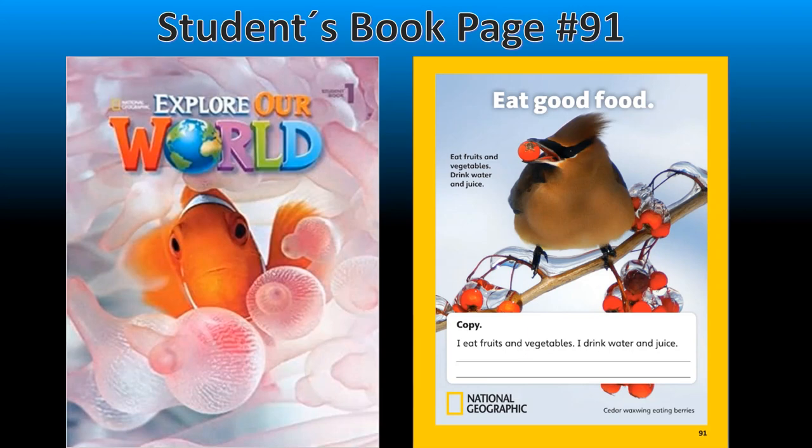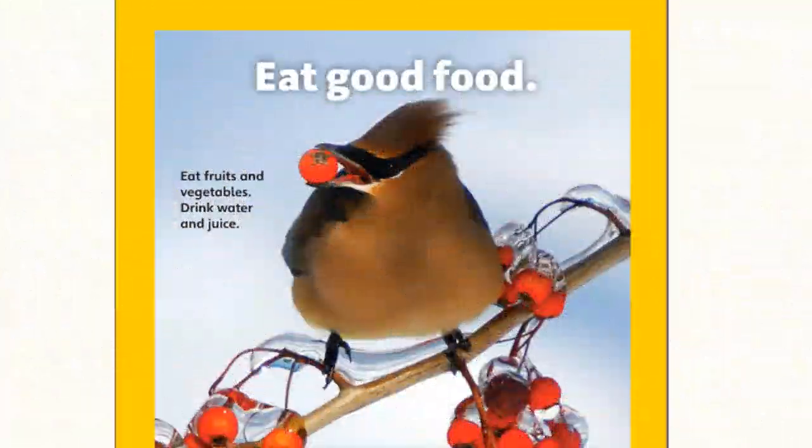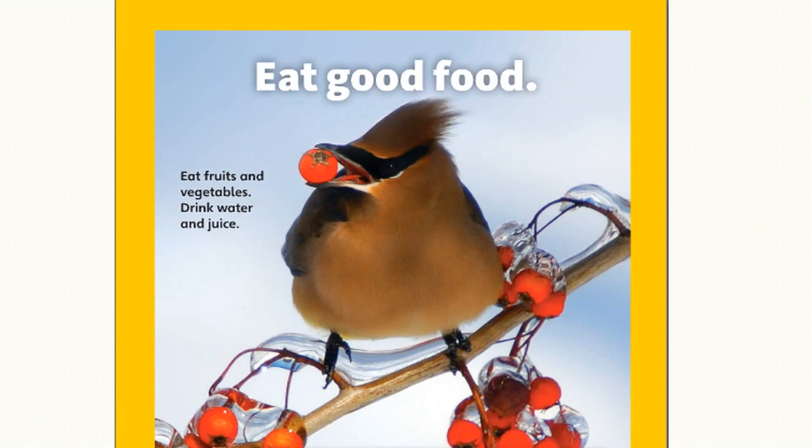Now, please, open your student's book in page number 91. Look at the picture. What do you see? What is the bird doing? The bird is eating good food. The title here is eat good food. And the bird is eating good food. The bird is eating berries. These are berries. The animals, they also eat good food, healthy food.